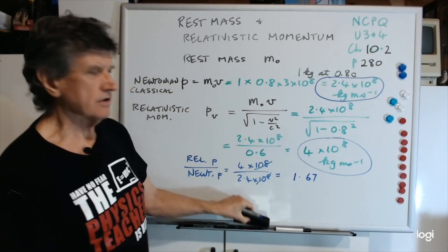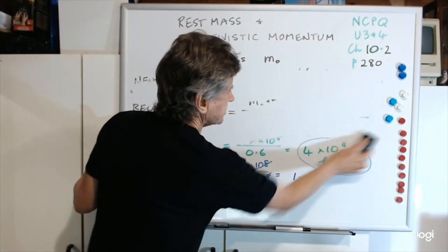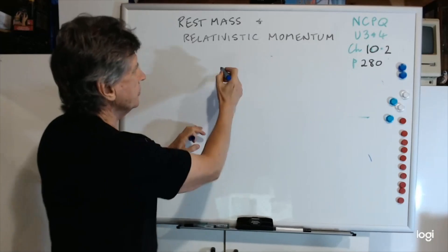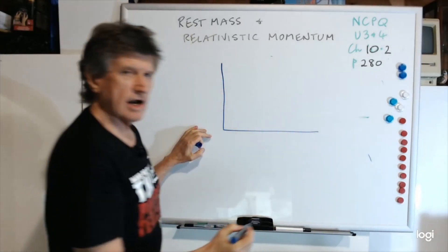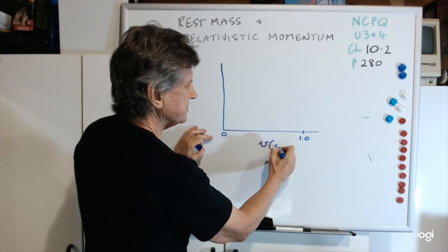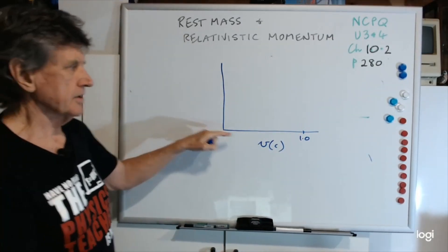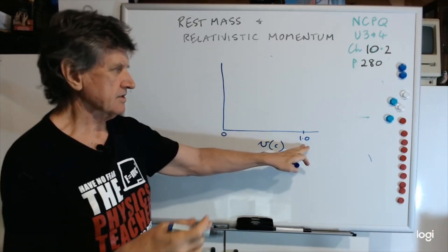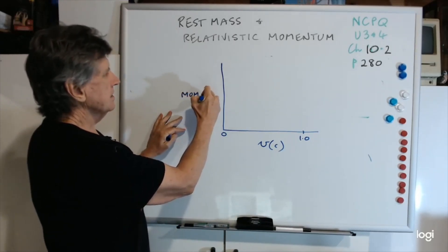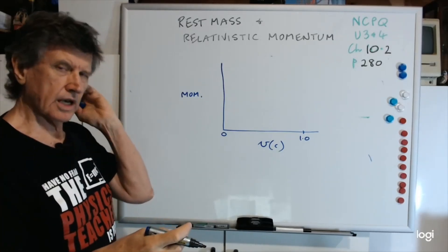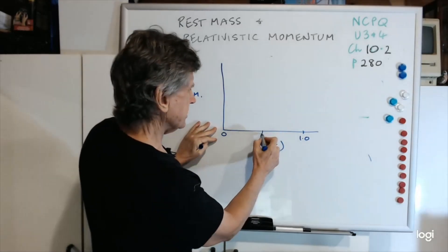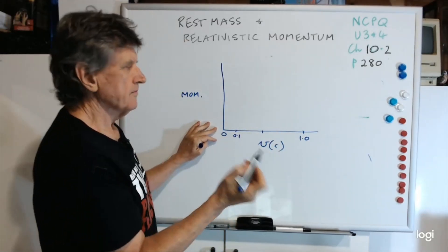I'll just rub this off for a minute, get rid of all of this. I just want to show you one other thing with momentum. If you look at a graph, this is the speed going from 0 to 1.0, this is in units of c. So 0c, in other words, it rests up to 1c. That's travelling at the speed of light. And if you look at the momentum here, you can look at either the Newtonian momentum or the classical momentum. If you look at a 1 kilogram object, point 1 is about here.